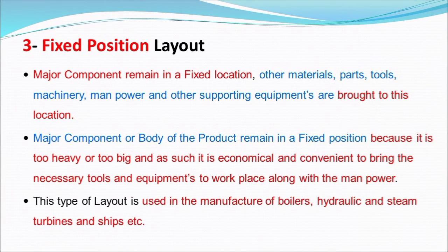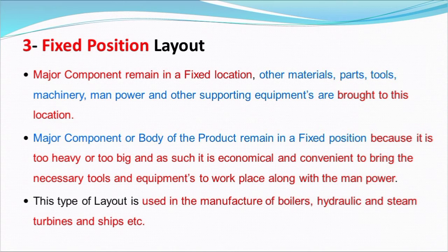The third type is fixed position layout, where the major component remains in a fixed location. Other materials, parts, tools, machinery, manpower, and other supporting equipment are brought to this location. The major component or body of the product remains in a fixed position because it is too heavy or too big, and so it is economical and convenient to bring the necessary tools and equipment to the workplace along with the manpower. This type of layout is used in the manufacturing of boilers, hydraulic and steam turbines, and ships, etc.